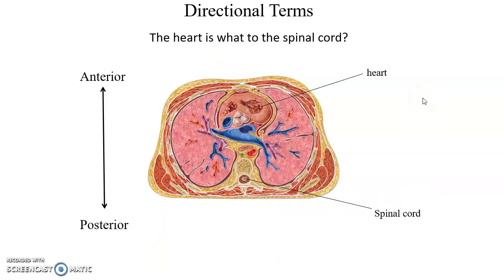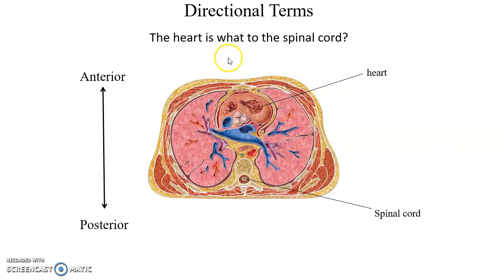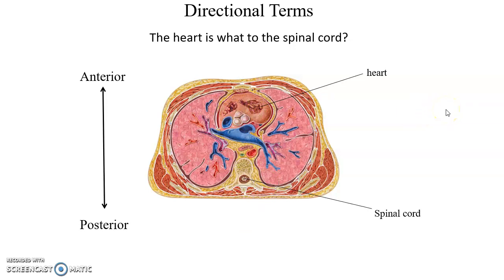Then we have anterior and posterior. Anterior means toward the front of the body, where the chest is. Posterior means toward the back of the body — front is anterior, back is posterior. Here is the spinal cord and here's the heart. The spinal cord is posterior to the heart; it is closer to the back than the heart is.